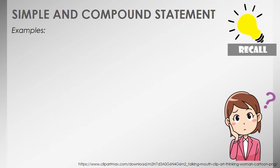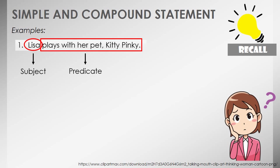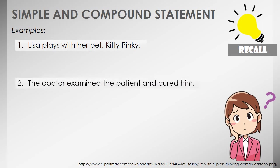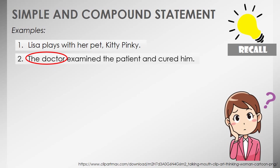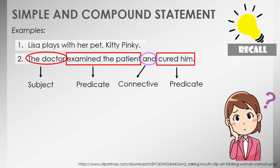To clearly differentiate the two, we have the following examples. The first sentence has only one subject and one predicate, therefore it is a simple sentence. The second sentence has one subject — doctor — with two predicates: 'examined the patient' and 'cured him,' connected by the word 'and' as connective. Since we have a connective and two simple sentences, this is a compound sentence. The third one shows two different ideas with different subjects and predicates connected by 'and,' proving it is a compound sentence. The last example with one subject and one predicate is a simple sentence.